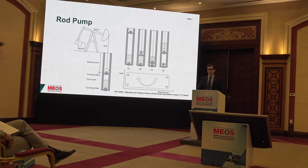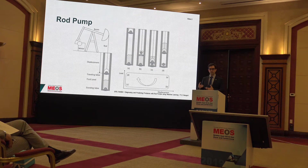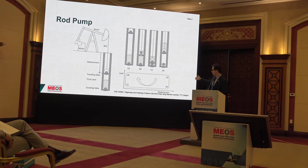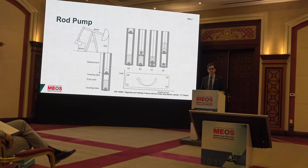It was discovered in the 1930s that if you measure both the load — the weight of the oil on the traveling valve as it moves — as well as the displacement of where the traveling valve is located during the stroke against each other, you get a so-called dynamometer card. The load on the vertical axis and the displacement on the horizontal axis gives you this picture.